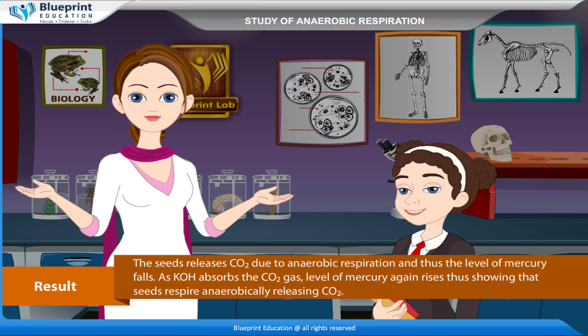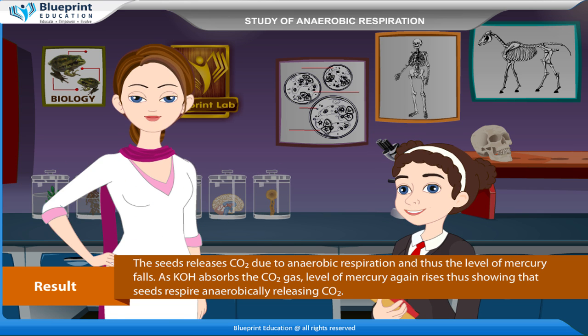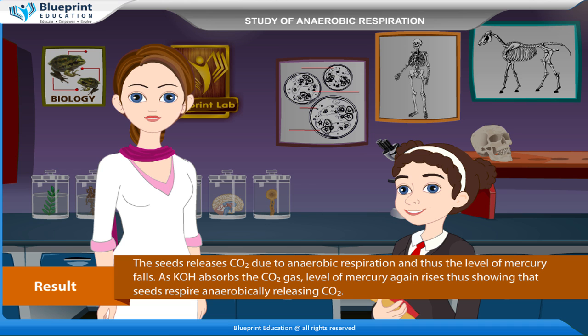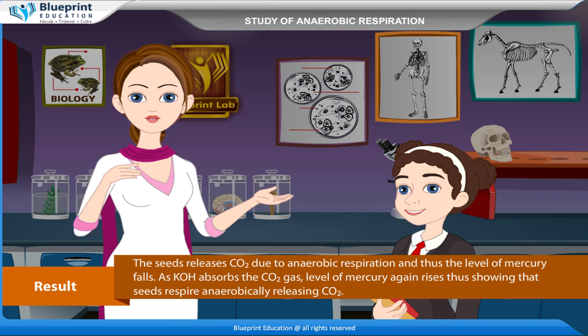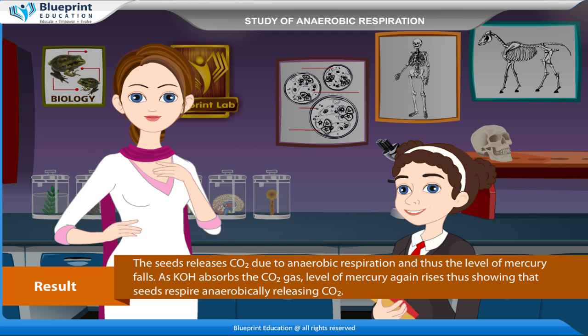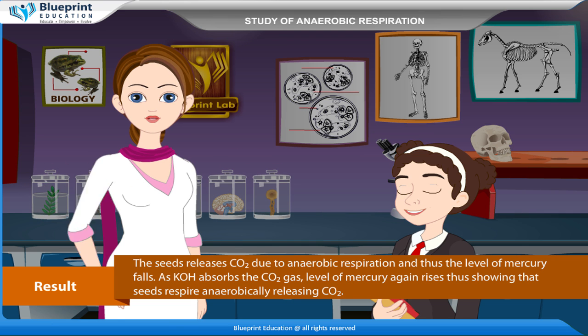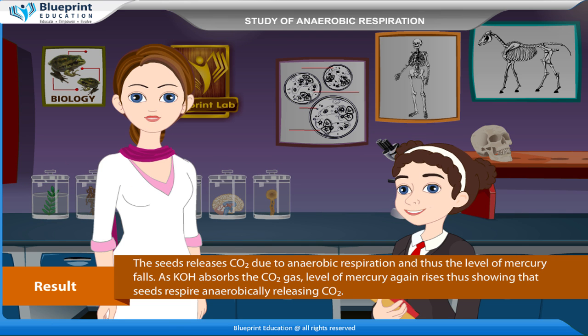As KOH absorbs the CO2 gas, the level of mercury again rises, thus showing that the seeds respire anaerobically, releasing CO2.